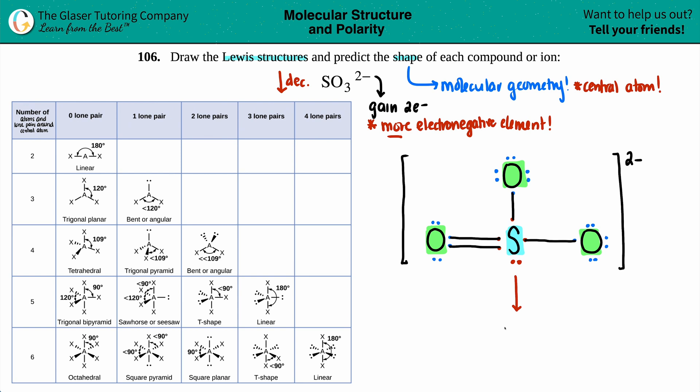And now how many lone pairs around the sulfur? Well, you got one lone pair, right? You got two dots—that's one lone pair. Nobody cares about any of these because they're not the sulfur. You only care about the central. So you got three atoms and one lone pair.